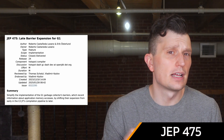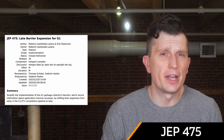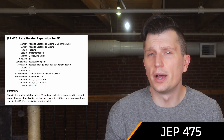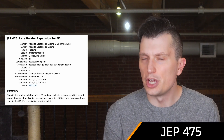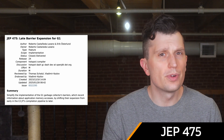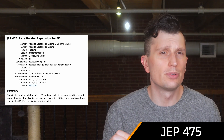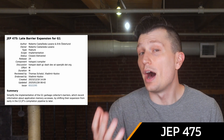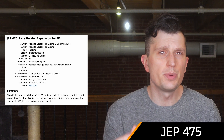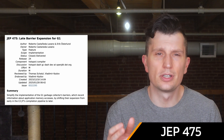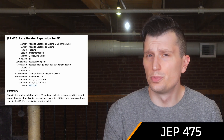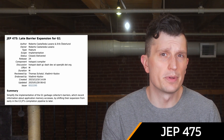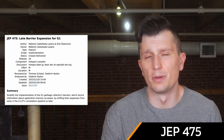JEP 475 adds light barrier expansion for the G1 garbage collector. This is a rather technical JEP, so you'll want to read it to get the real details. The high-level overview is how C2 handles compilation of G1's write barriers, which should result in a 10% to 20% reduction in overhead for C2 compilation.